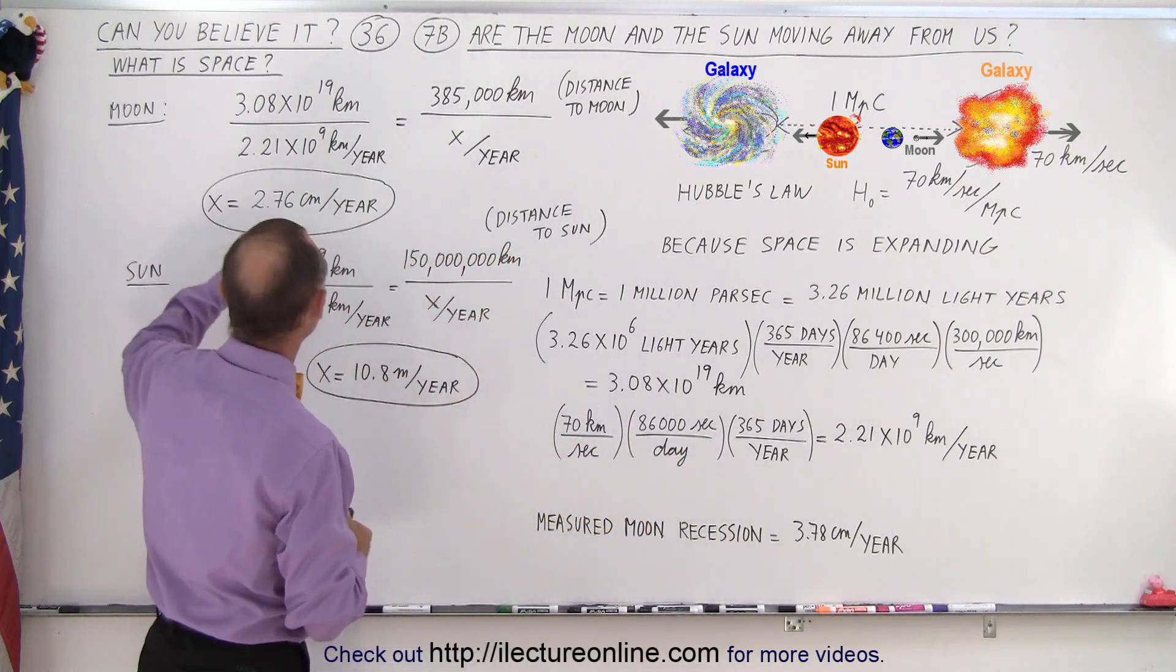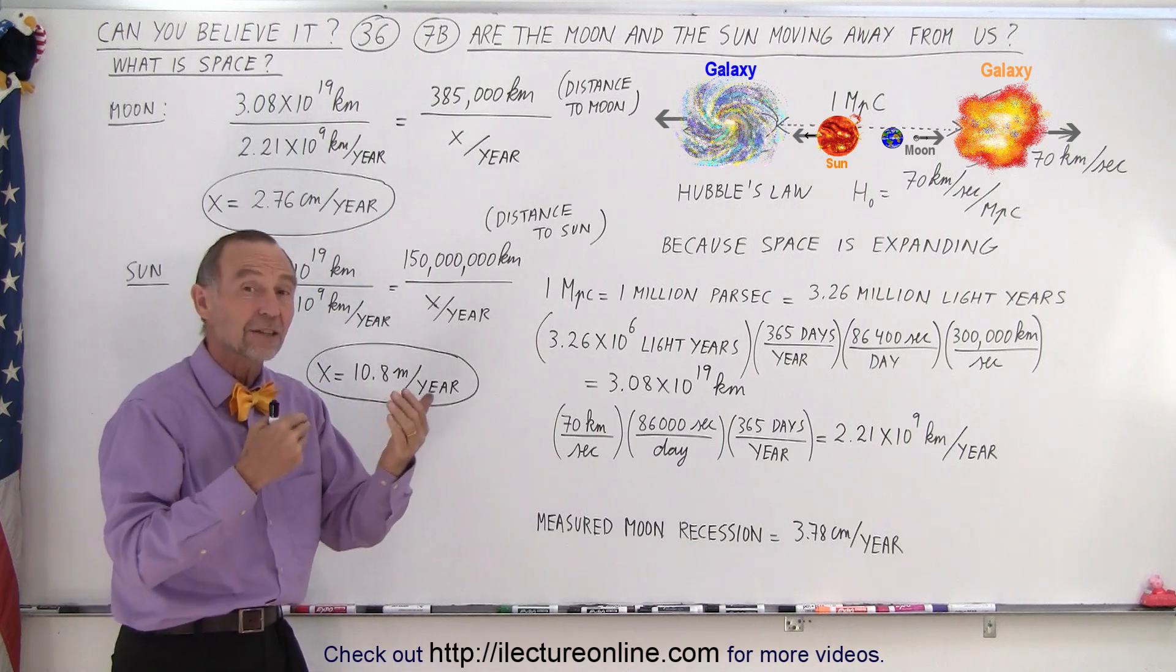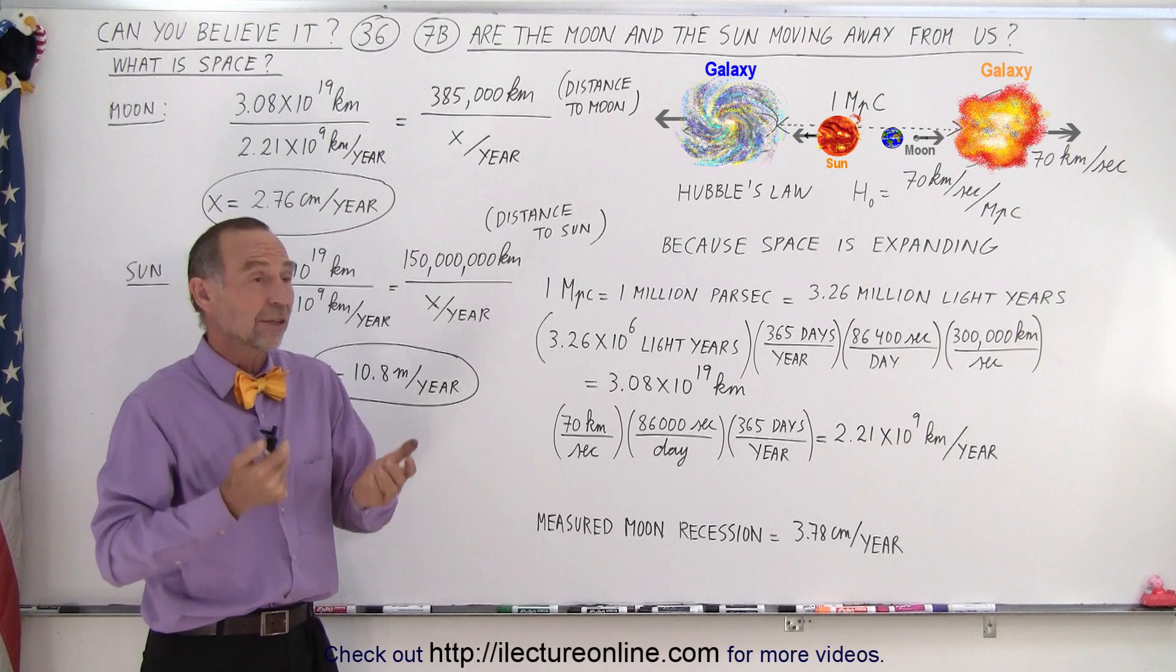Which means that the additional effect of the Hubble law doesn't appear to be affecting the distance between the moon and the earth. What about the distance between the sun and the earth?